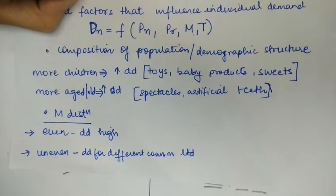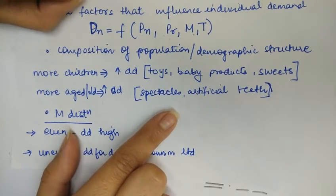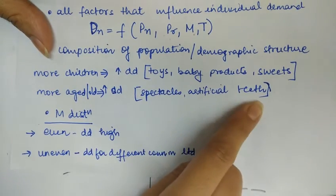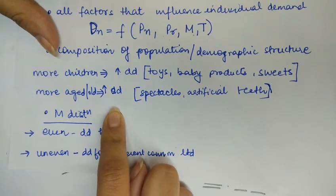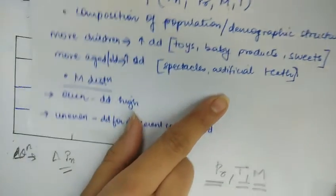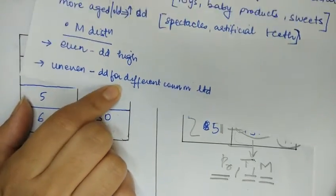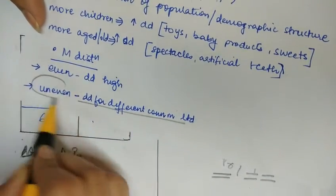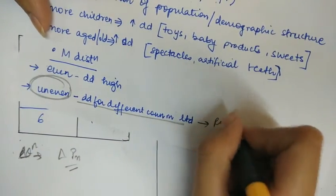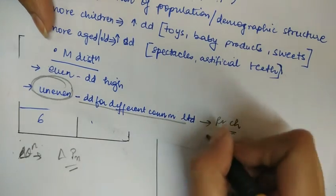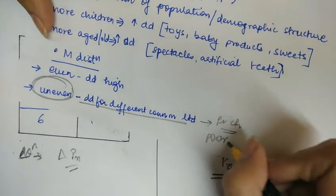The composition of population is also important — more population means more consumers. If there are more children in the population, demand for toys, baby products, and sweets will be higher. If there are more elderly people, demand for spectacles and artificial teeth will be high. Demand also depends on income distribution. If income distribution favors the rich, comforts and luxuries will be more in demand. If it favors the poor, necessities will be more in demand.